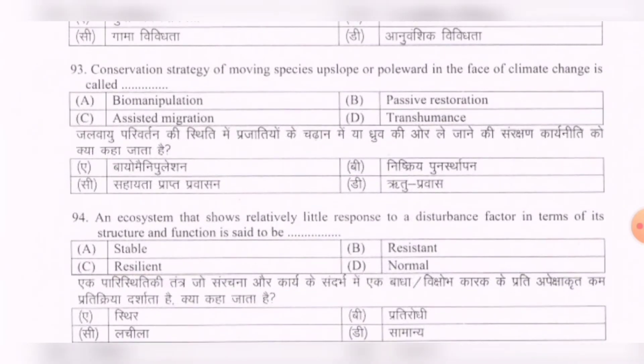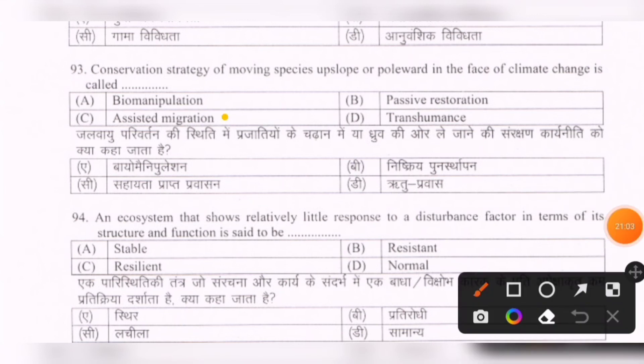Next question: The conservation strategy of moving species upslope or poleward in the face of climate change is called — options are: biomanipulation, passive restoration, assisted migration, transhumance. The correct option is C — assisted migration.